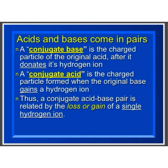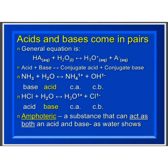Acids and bases come in pairs. A conjugate base is the species formed from the original acid after it donates its hydrogen ion. A conjugate acid is the species formed when the original base gains a hydrogen ion. A conjugate acid-base pair is related by the loss or gain of a single hydrogen ion. A substance that can act as both an acid and a base, as water does, is known as amphoteric in nature.